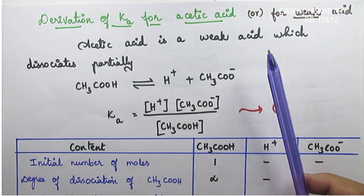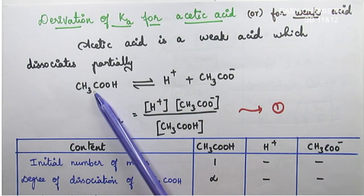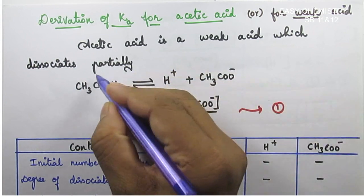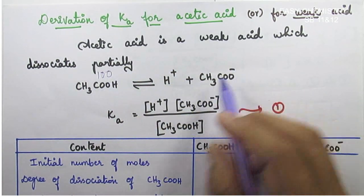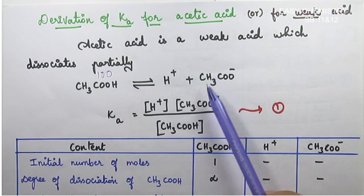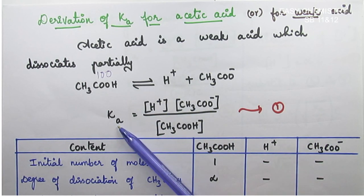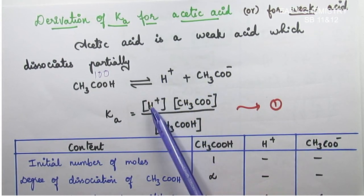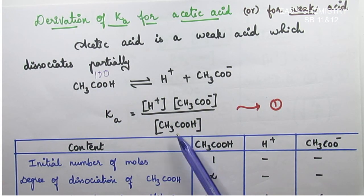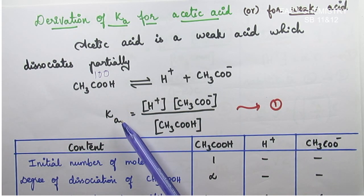For a weak acid, we write the equilibrium constant Kc. Ka equals the concentration of H⁺ multiplied by the concentration of acetate ion, divided by the concentration of acetic acid. This is the dissociation constant Ka. Now we have to do the derivation using concentration terms.